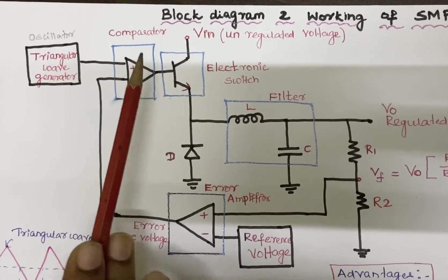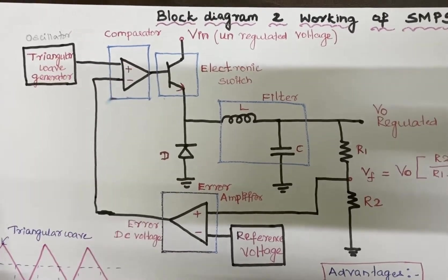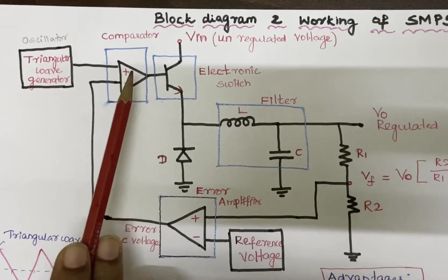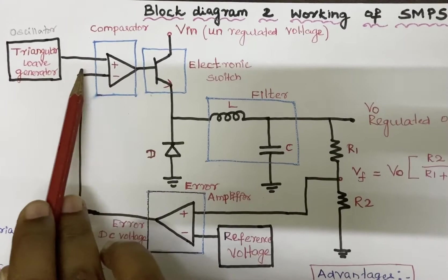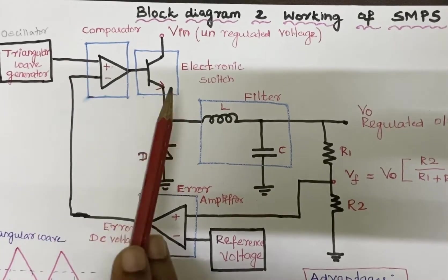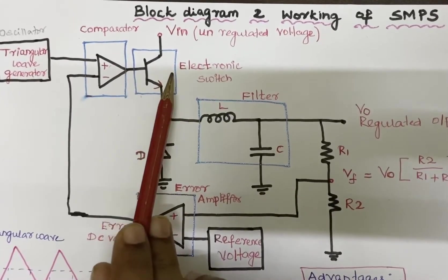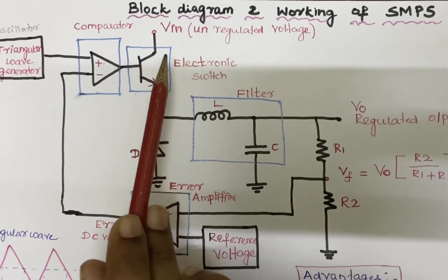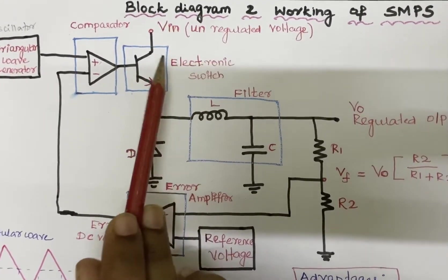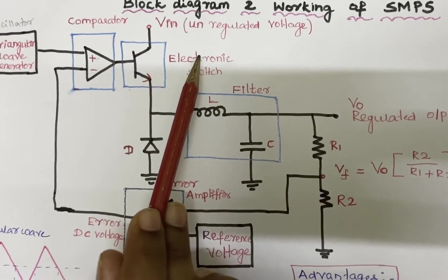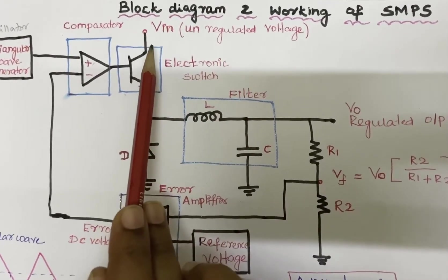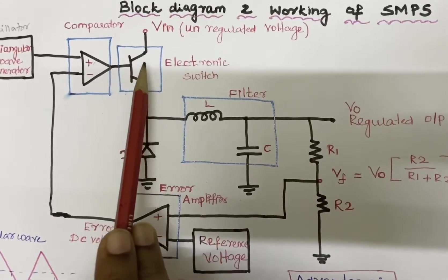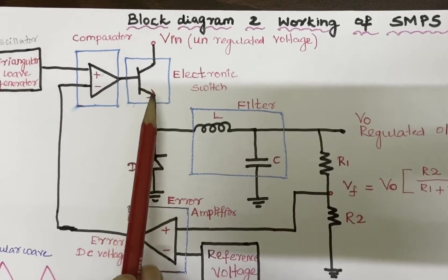The triangular wave is given to the non-inverting terminal of the comparator, so the comparator compares the error voltage along with the triangular wave. The switching transistor can be either on (saturation state) or off (cutoff state). From the unregulated voltage given to the collector of the switching transistor Q, the output is taken from the collector.